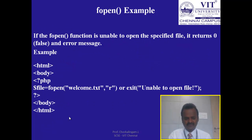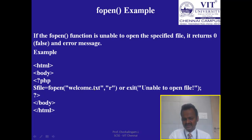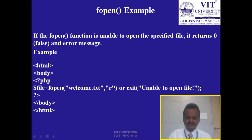Here is an example for fopen. I am trying to open the file welcome.txt in read mode. If this file does not exist, fopen returns false and throws an error message: 'unable to open the file.' If the file exists, it will be opened and the file pointer will be positioned at the beginning of the file.